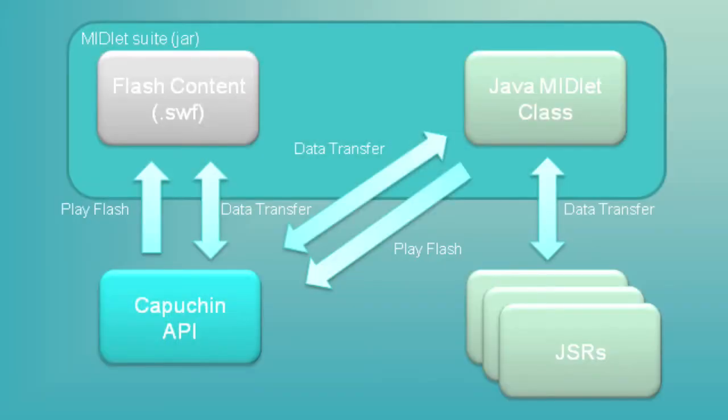The not-so-good part about Flashlight is that it's a technology that, at least on most wireless devices, is contained by itself and is not getting access to intelligence from deeper down into the phone. So the short definition of Project Capuchin is an API that is bridging Flashlight and Java ME, meaning that you get the best of both worlds from those two technologies.